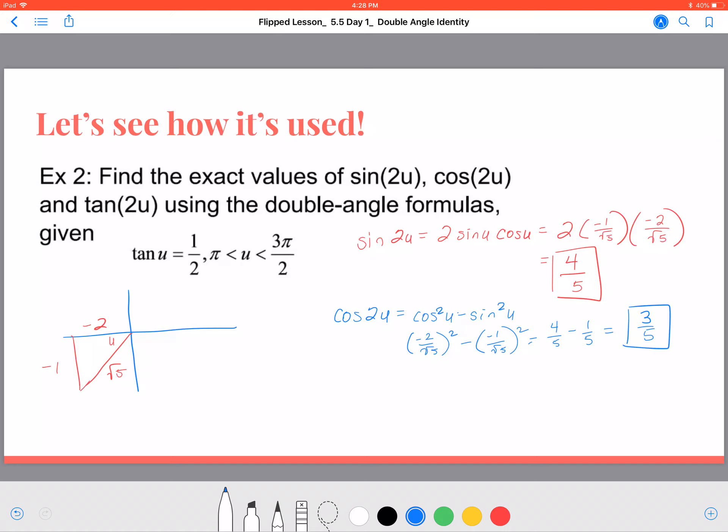Now again, we could apply the formula for tangent, but since we have the sine of 2u and cosine of 2u, we know the tangent of 2u will equal the sine of 2u over the cosine of 2u, which will be 4 fifths divided by 3 fifths. That's 4 fifths times the reciprocal there, and we get an answer of 4 thirds. Problem solved.